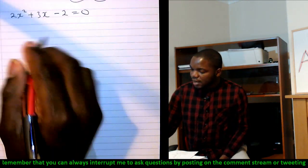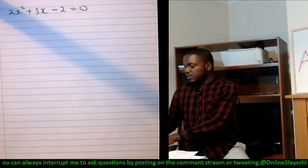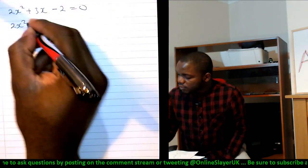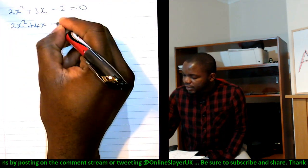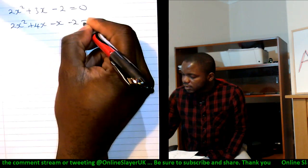Simple, isn't it? That's going to be plus 4 and minus 1. So 2x squared plus 4x minus 1x minus 2 equals 0.